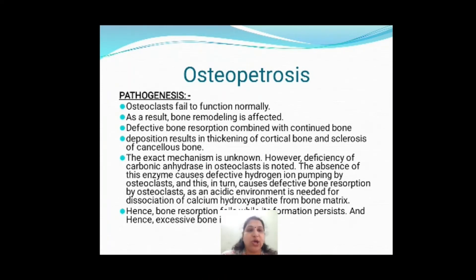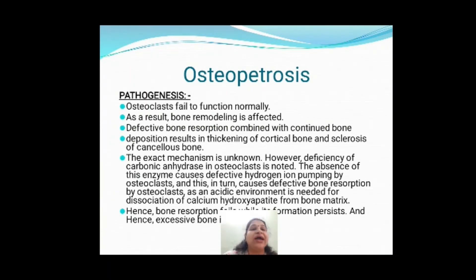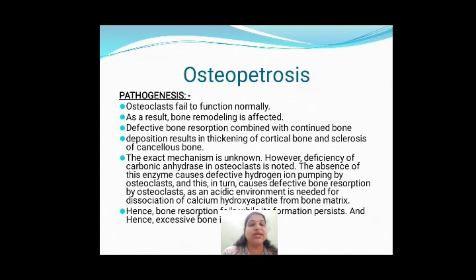The exact mechanism of why there is no bone resorption is not fully known, but they suggest there is a deficiency of carbonic anhydrase enzyme in osteoclasts. The absence of this enzyme causes defective hydrogen ion pumping, which in turn causes defective bone resorption. The exact mechanism is not confirmed, but carbonic anhydrase deficiency is the presumed cause.